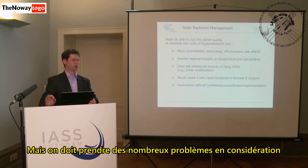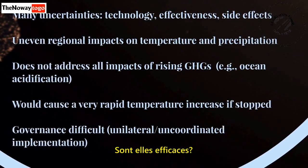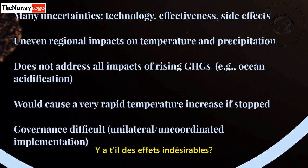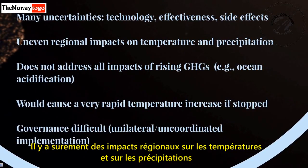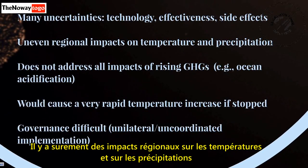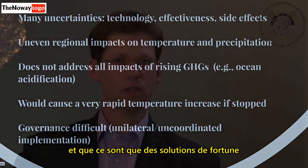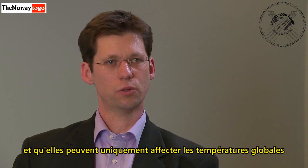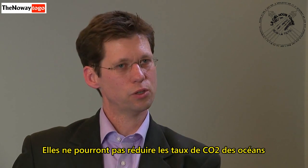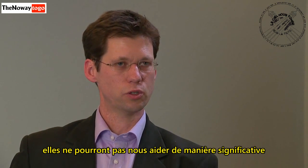But there are a lot of problems to be considered — uncertainties with the technologies, such as how well they would work and what kinds of side effects they would bring. There are also very uneven regional impacts predicted on temperatures and precipitation. Another big problem is that solar radiation management techniques would only be a band-aid solution, addressing global temperatures but not reducing carbon dioxide in the oceans and not helping with ocean acidification.